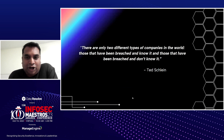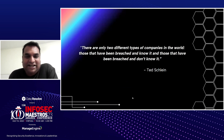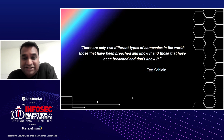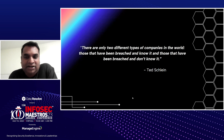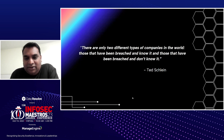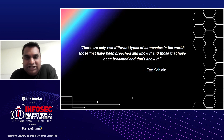I'm going to start with a quote mentioned by Ted Skeelan. There are only two different types of companies in the world — those who have been breached and know it, and those who have been breached and don't know it. The second type is going to be more dangerous because they don't even know that a breach has happened.